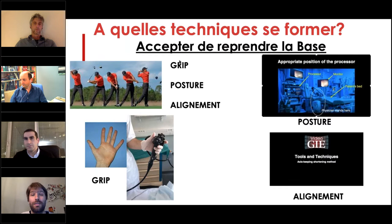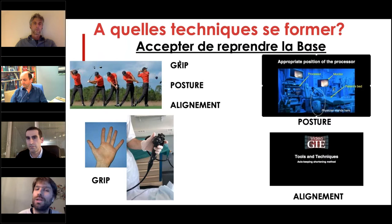Quand on se reforme, la base c'est d'accepter de reprendre les bases. J'ai pris une analogie avec le golf : un grand joueur de golf prend un cours et le prof revient toujours sur la base — le grip, la posture et l'alignement. En endoscopie, c'est pareil : le grip c'est la façon dont on tient l'endoscope, la posture c'est l'installation du matériel, et l'alignement c'est d'avoir l'endoscope le plus droit possible.